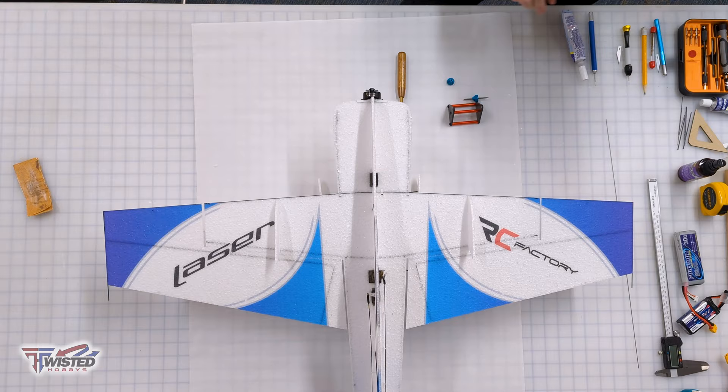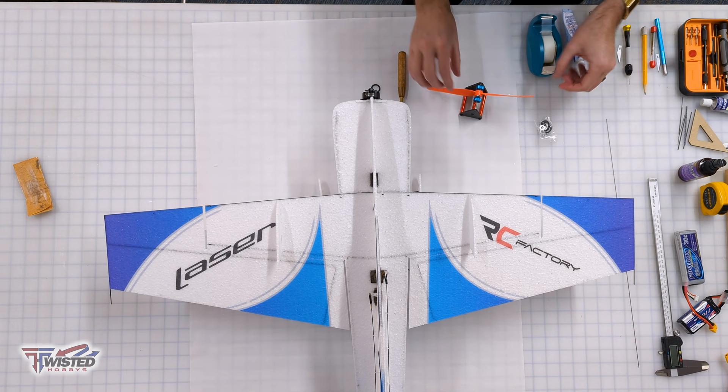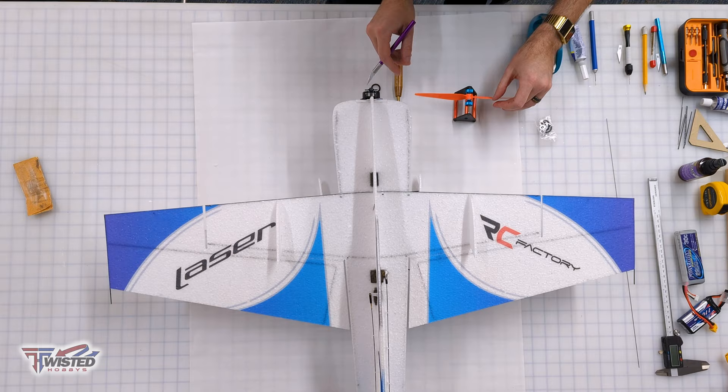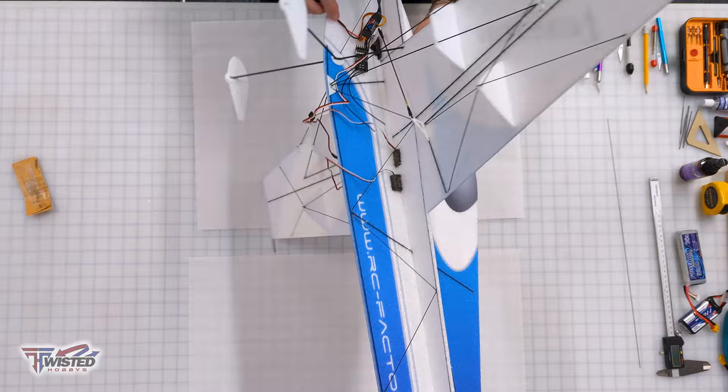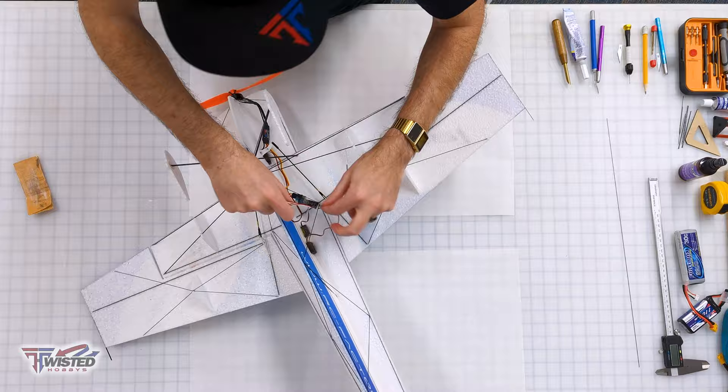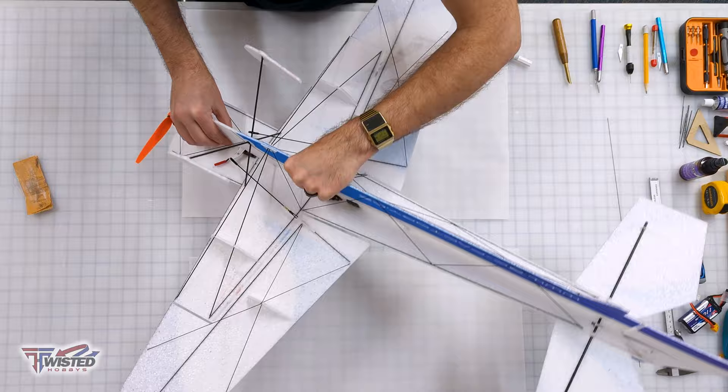And then we're ready to balance and install our prop. You can get this prop balancer and prop installation tool at Twisted Hobbies. Looks like it's all balanced with just a little bit of tape. Then I do a little bit of wire management and just tidy it up. Glue on the receiver.